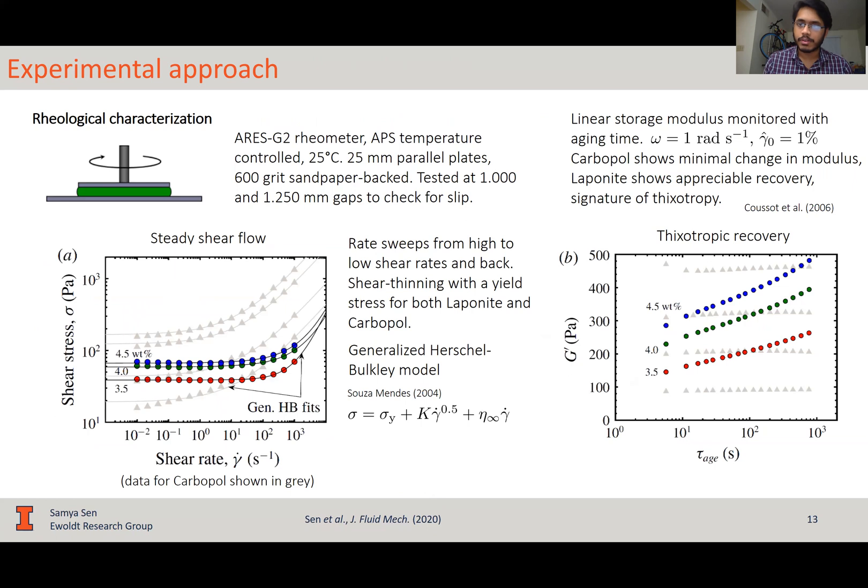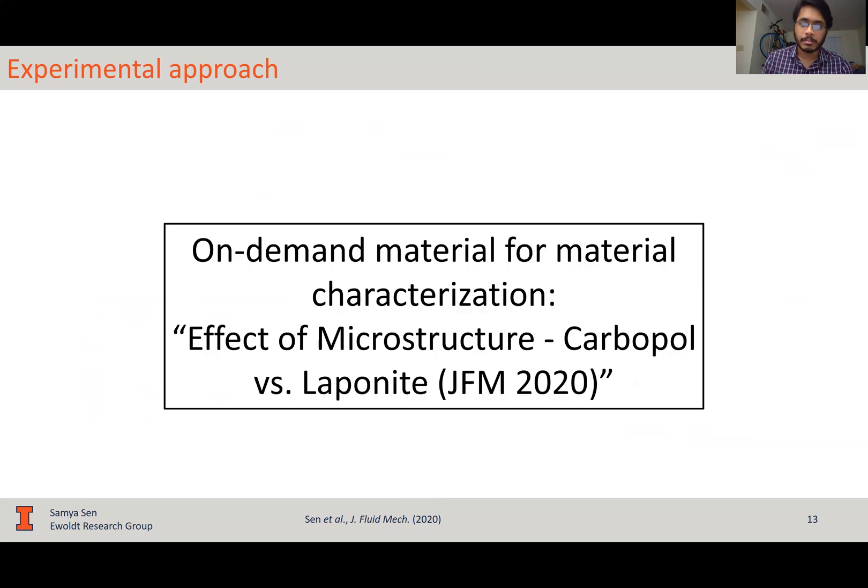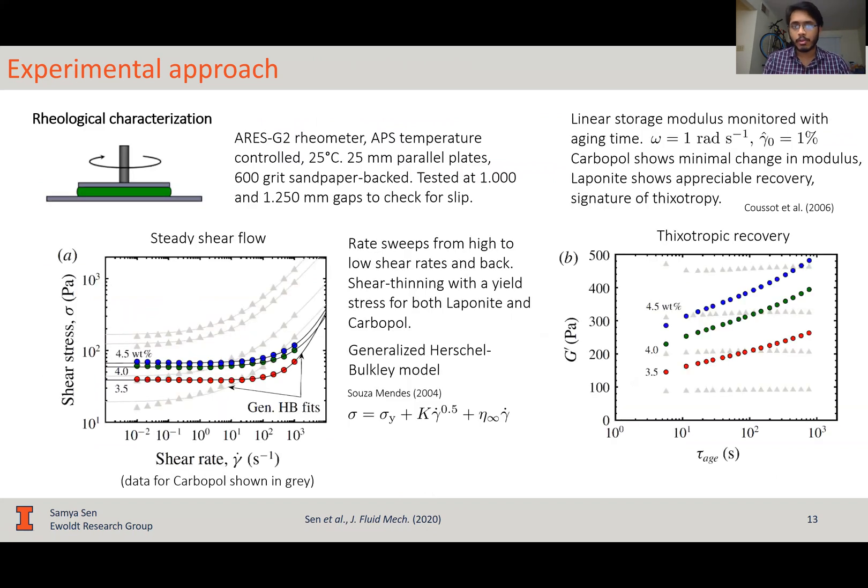Again, because we are using two different fluids, we have to characterize the rheology of these to be used for studying the drop impact behavior, for which, again, I'll not be going into the details, and you can refer to the supplementary material for the complete information, but I'll only point out that both carbopol and laponite, which are used in this work, are yield stress fluids, but they're microstructurally different. Most importantly, carbopol, as seen by monitoring the linear G prime versus aging time, does not show any change with time, whereas laponite shows appreciable recovery, so it is a signature of thixotropy. So carbopol is a yield stress fluid, but it is not thixotropic, laponite is.